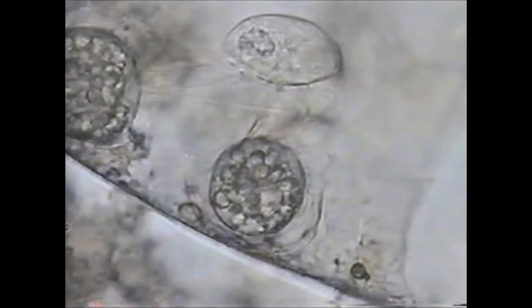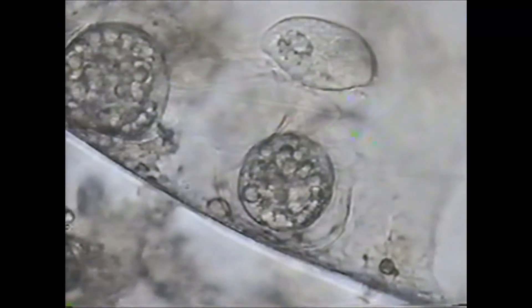They are classified as ciliates because they produce ciliated larvae which enable them to move. The larvae are produced by internal or external budding. The larvae, called swarmers, change into adults by metamorphosis.